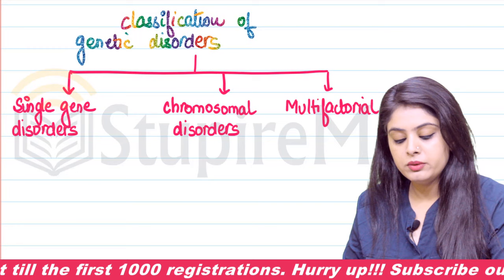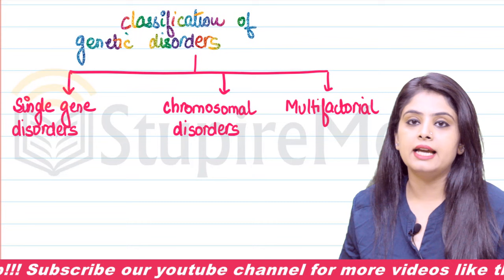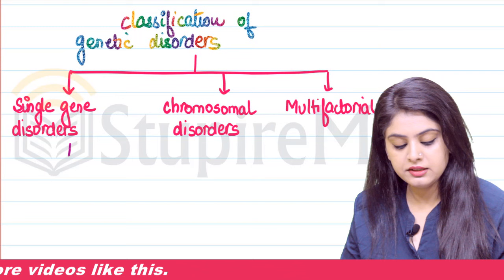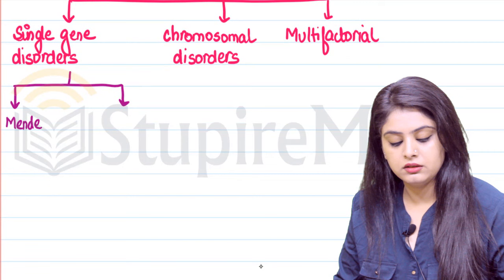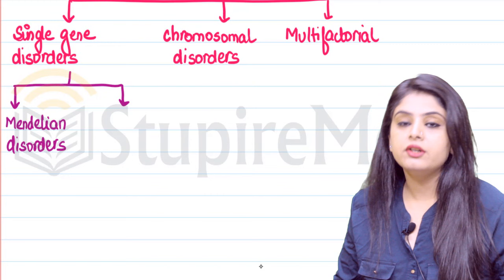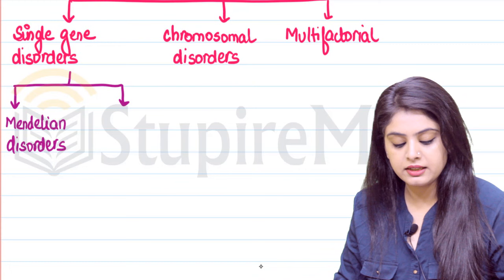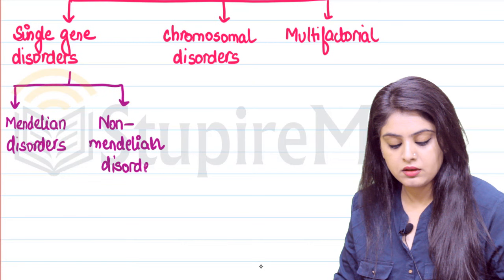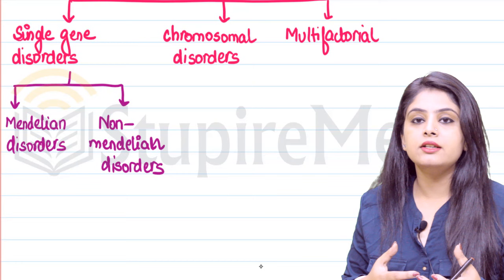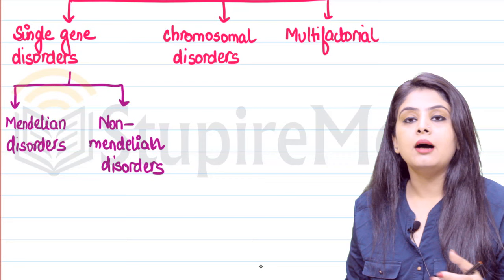Now let's deal with each one of them and see what further categorizations we have. When we are talking about single gene disorders, these can further be taken into two categories — they can either be Mendelian disorders, or the disorders which do not follow classical Mendelian rules, which automatically become the non-Mendelian disorders.